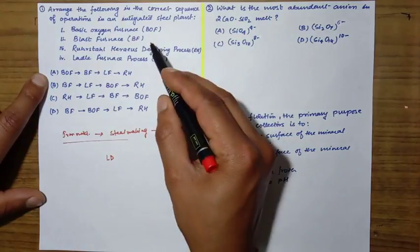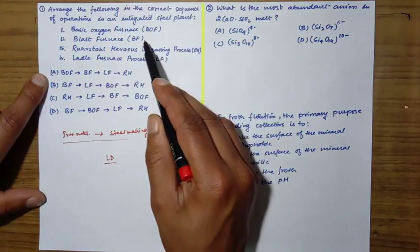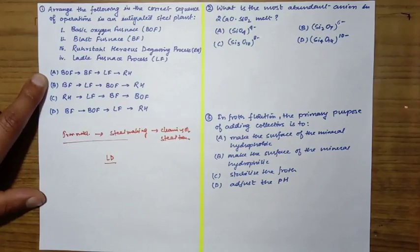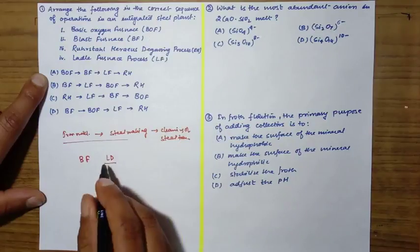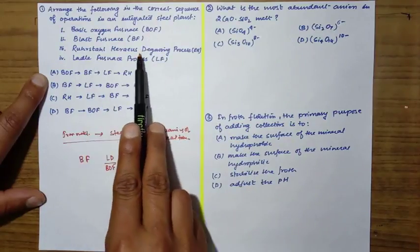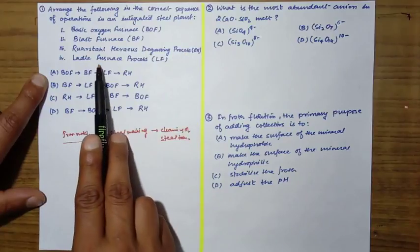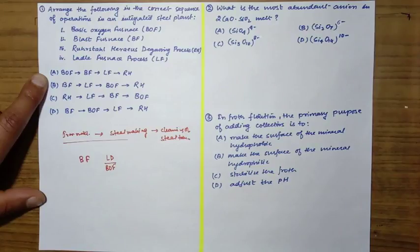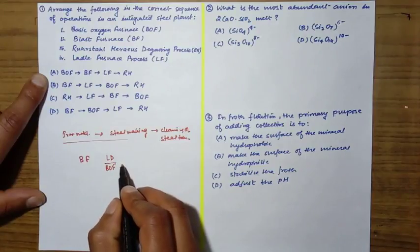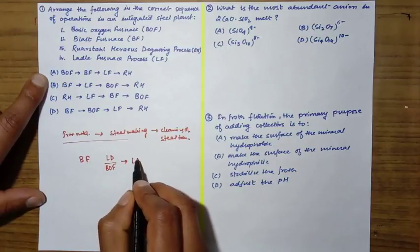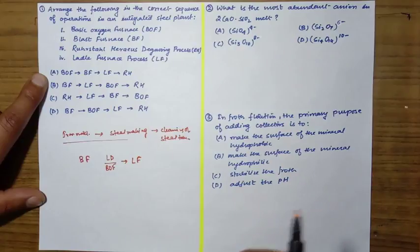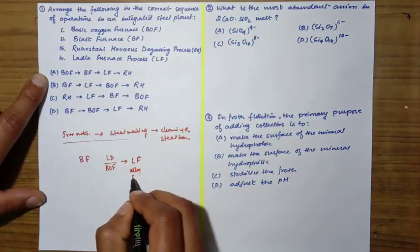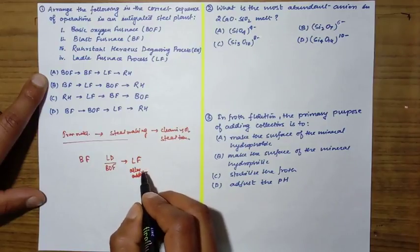The blast furnace is where we produce pig iron, so blast furnace will come first. Then BOF, then after LD converter, the steel is sent to ladle furnace for desulphurization or some kind of alloy addition.